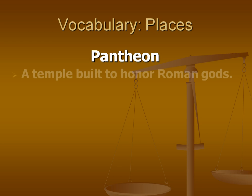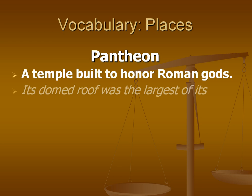The Pantheon is a temple built to honor the Roman gods, and its domed roof was the largest of its time. It also had an interesting feature called an oculus, which was the hole in the top of the dome. Because hot air rose and would go out of the top of the oculus, it sort of created an internal air conditioning system in ancient Rome.